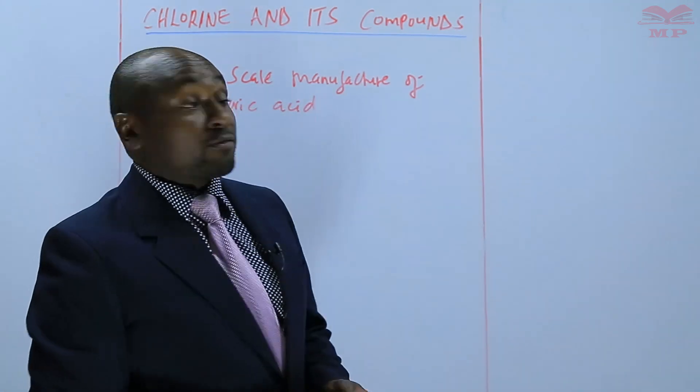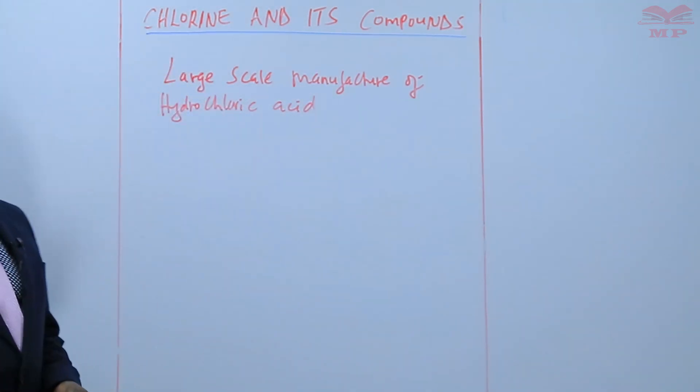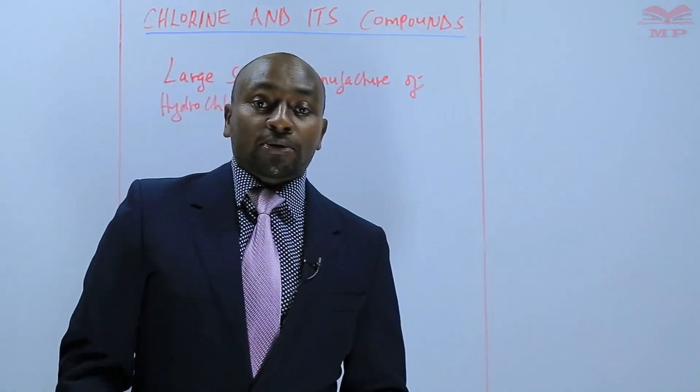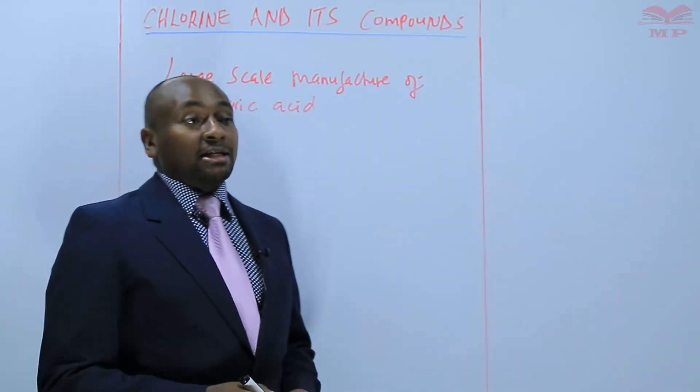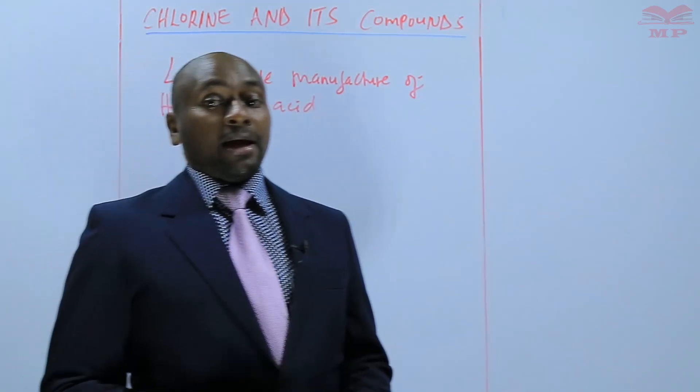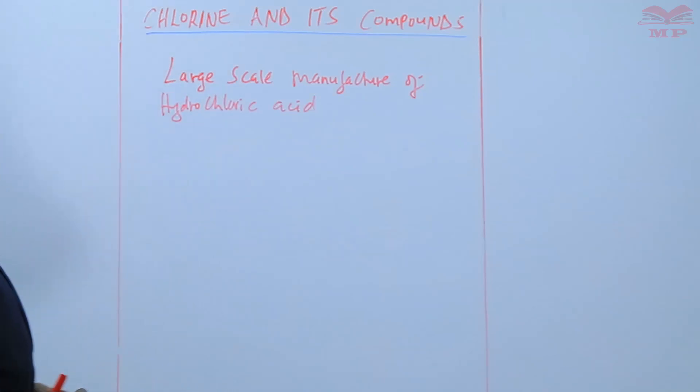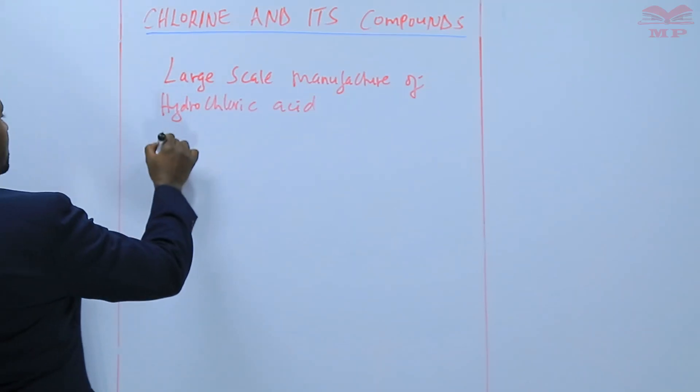Large-scale manufacture of hydrochloric acid is an industrial process that is carried out in an industrial setup. And in this process, we have the raw materials.